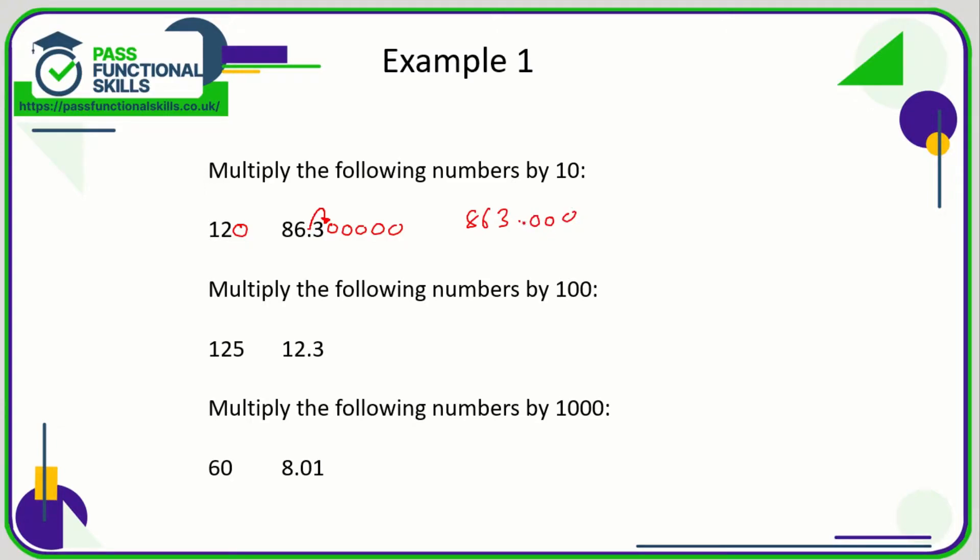So the answer is just simply 863. 125 times 100: we're just going to add two zeros, easy. 12,500. And for 12.3, we're going to move the decimal point two positions to the right, one, two. So it's going to be after that zero there. So it's 1230.